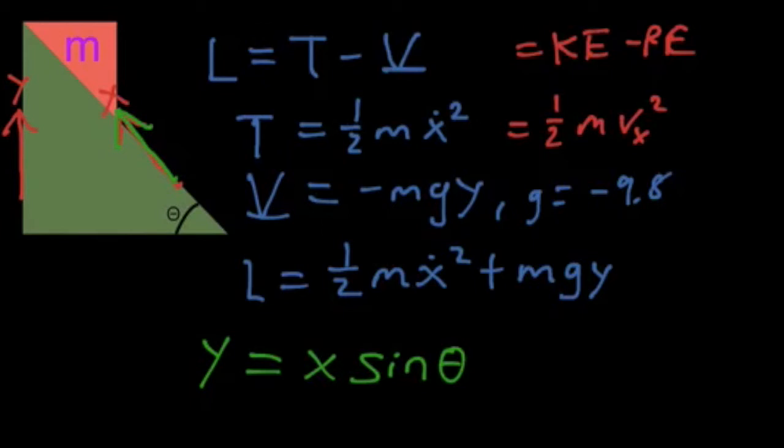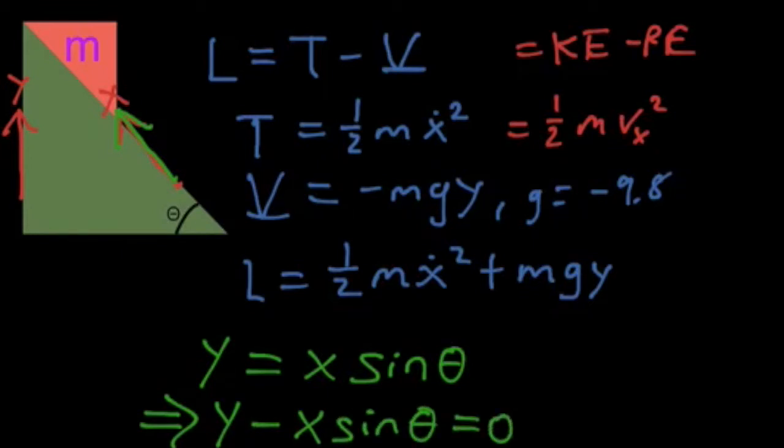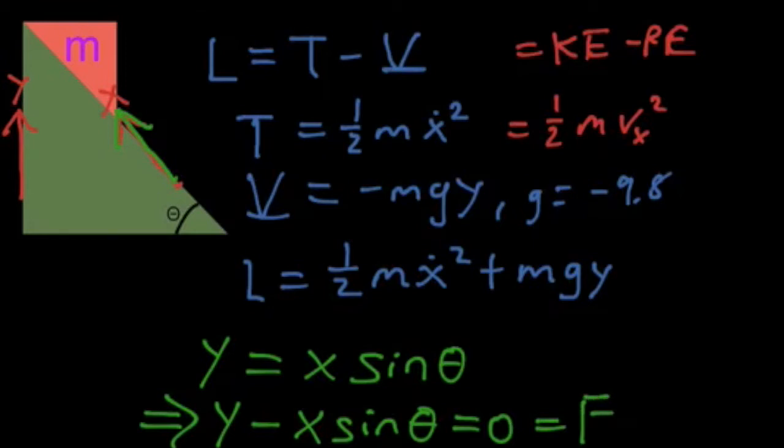And so with this constraint, we're going to set it equal to zero. So y minus x sin theta equals zero. And we're going to call that f, our constraint function. And that's going to come into play in just a little bit.